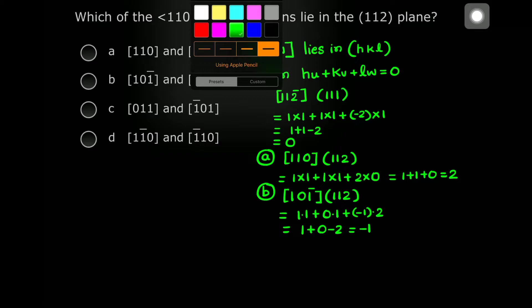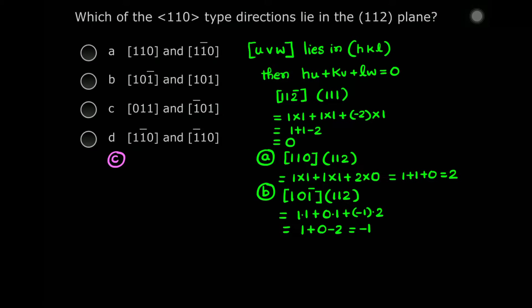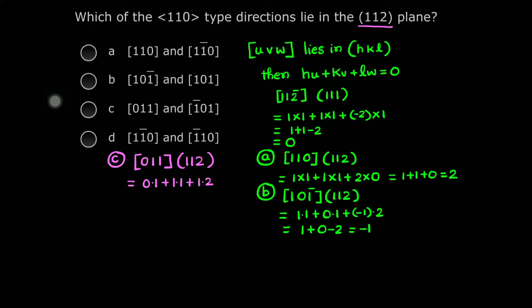Let's check the third option: direction [0 1 1] and the plane is (1 1 2). Taking the dot product: 0×1 + 1×1 + 1×2 = 0 + 1 + 2 = 3. So again, this direction will not lie in this plane.